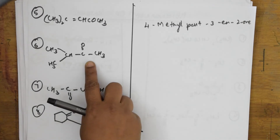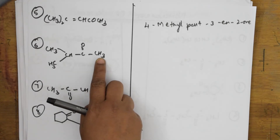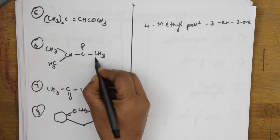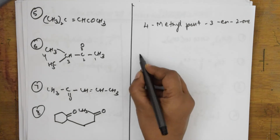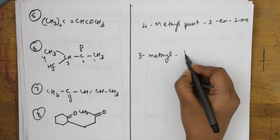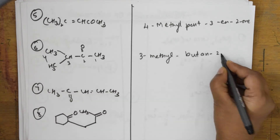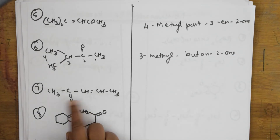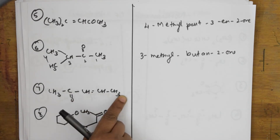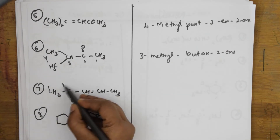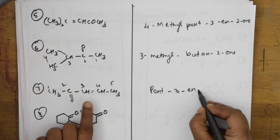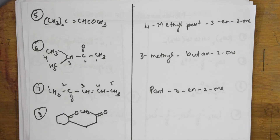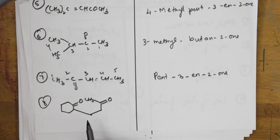In this example you have two methyl groups and an alkene. Total carbons: two, three, four, five — but methyl groups are taken as substituents. The answer is 4-methylpent-3-en-2-one. In the next compound you have a methyl group — take the longest chain, give it minimum numbers: one, two, three, four. Third position has a methyl group and second position has a ketone, so it is 3-methylbutan-2-one.